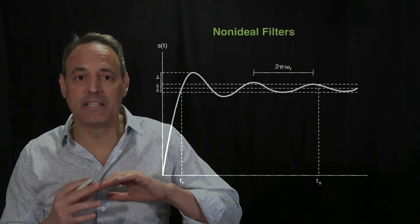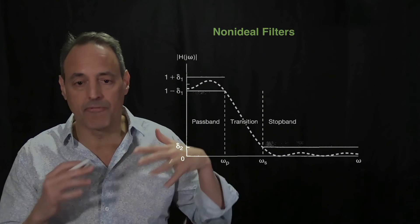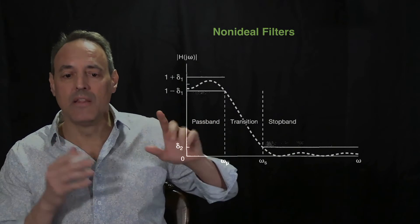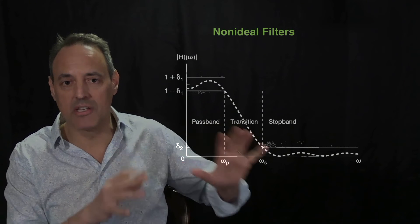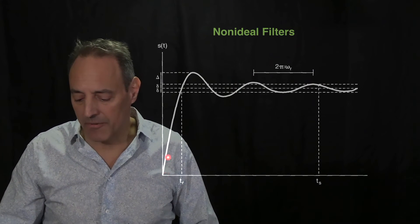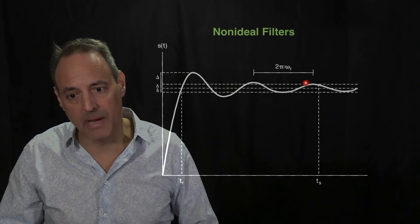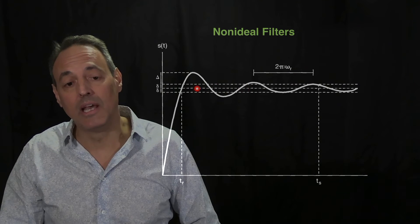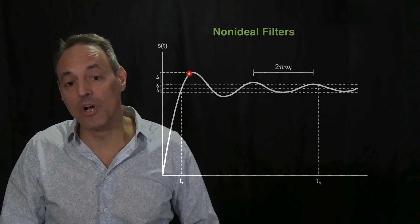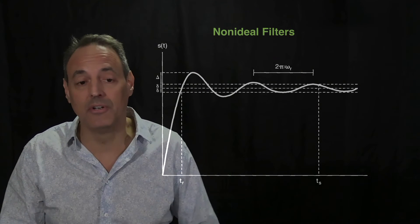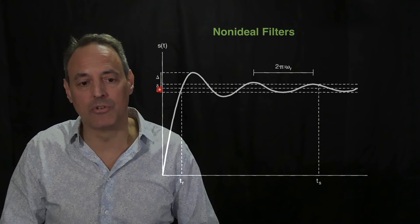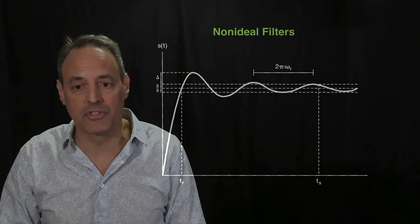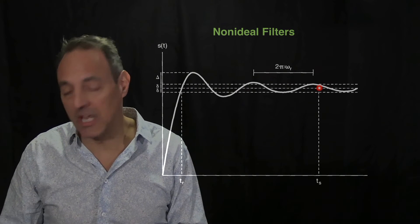Corresponding to the filter is its step response in the time domain. We have to see what this non-ideal filter means in the time domain — for instance, the filter comes on from the step response and there's this ring-down. Typically, you define a performance metric: you want the signal to come to a value of one, and it overshoots by some delta. You worry about how much it overshoots, and you define a tolerance band around one that you're willing to accept.